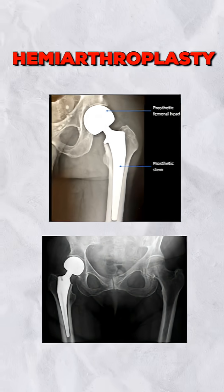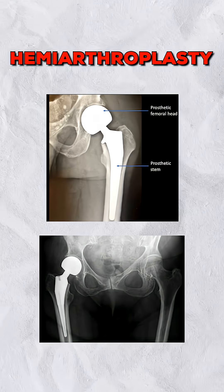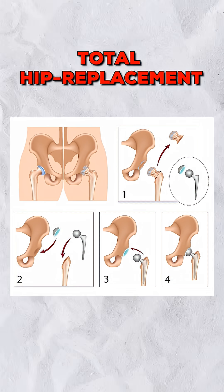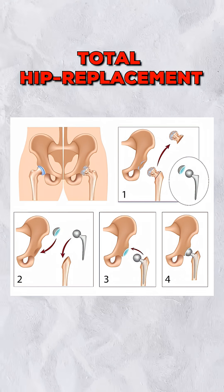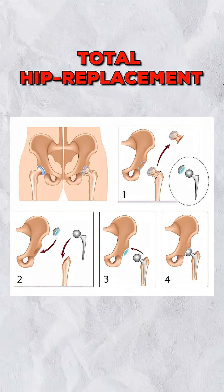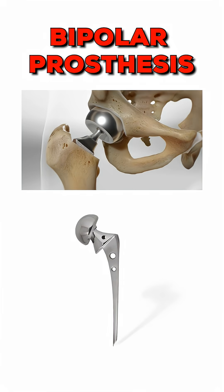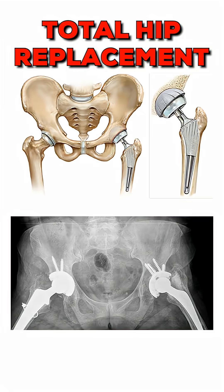The replacement is called arthroplasty. It can be hemi arthroplasty — replacing only the femoral head — or total hip replacement (THR), replacing both the acetabulum and the femoral head. For osteosynthesis, the implant of choice is cannulated cancellous (CC) screws. For hemi arthroplasty, it is a bipolar prosthesis. For THR, it is the complete total hip replacement implant set.